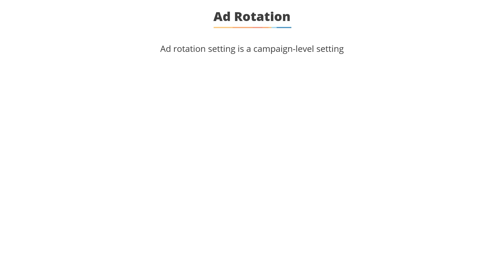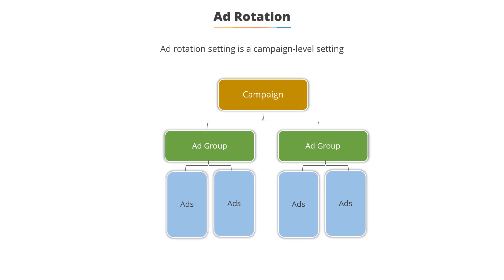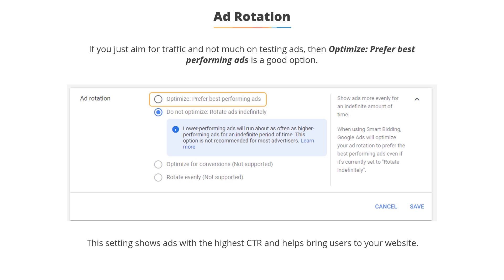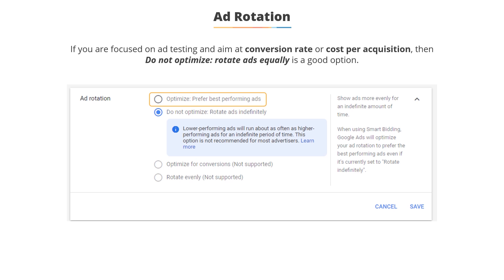An ad group can have multiple ads in it, and your ad rotation setting is a campaign-level setting that determines how Google rotates ads when you have multiple ads in an ad group. If you're just starting out and trying to get traffic to your site, there's an option called 'Optimize: Prefer Best Performing Ads,' which is a good option for new users, as Google is going to show the ad with the highest click-through rate most often. If you're focused on ad testing and want all your ads to have an equal opportunity to compete in the auction, use the setting 'Do Not Optimize: Rotate Ads Equally' so you can use proper ad testing.